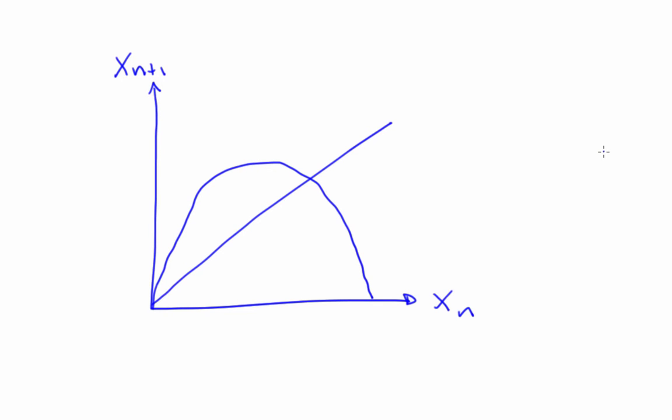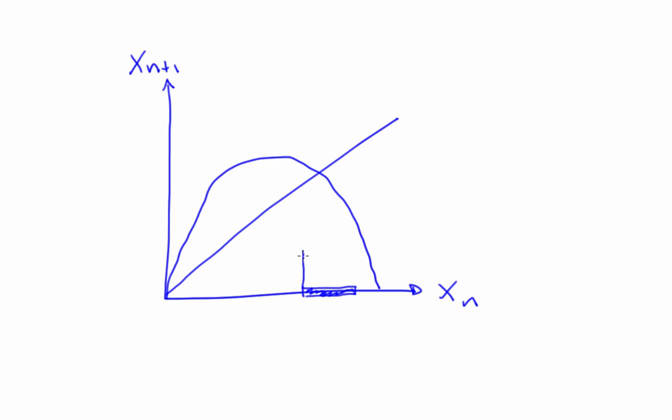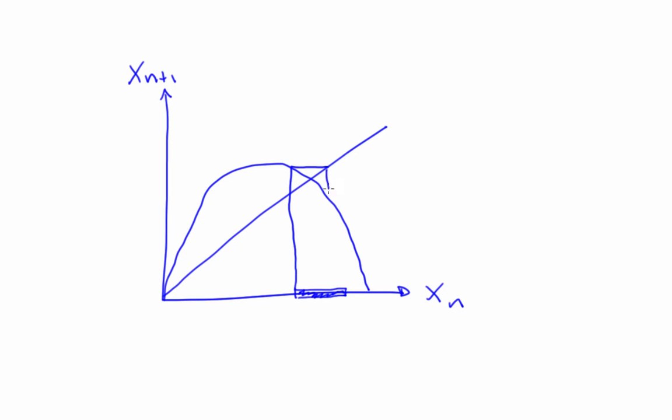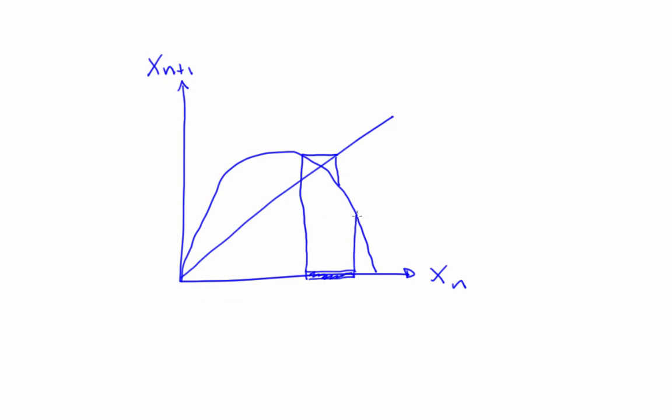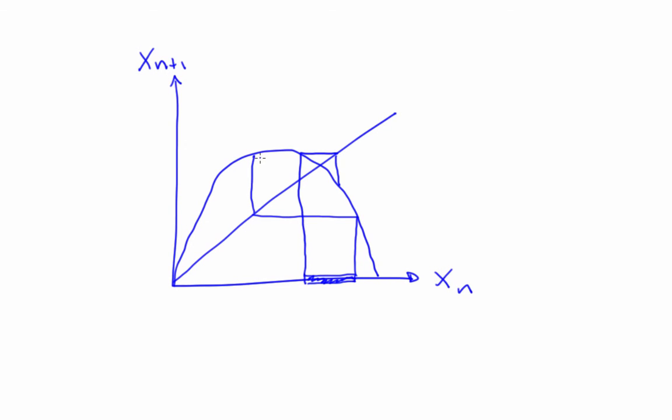Imagine starting a whole ribbon of initial conditions on the horizontal axis and watching how that ribbon changes shape as all of those initial conditions bounce off the curve. This end of the ribbon will go there, and the other end will go there. These two points are the end of the ribbon after one iteration, and you'll notice it's gotten reflected.